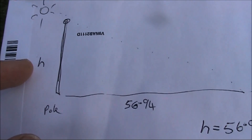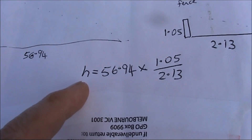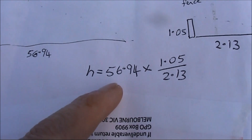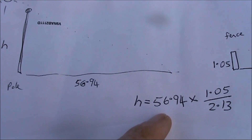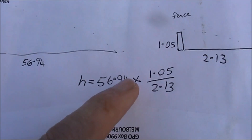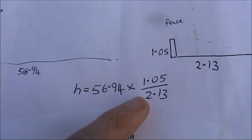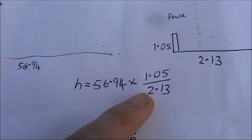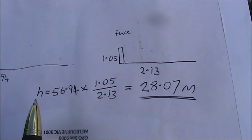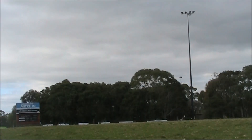How do we calculate our unknown tower height? We use this formula: height equals 56.94 — that's the length of the shadow that the unknown mast cast — multiplied by 1.05, which is the height of our fence, divided by 2.13, that is the length of the fence's shadow. When we do that, we get an answer of 28 metres. In other words, the mast is just under 3/16ths of a wavelength on 160 metres.